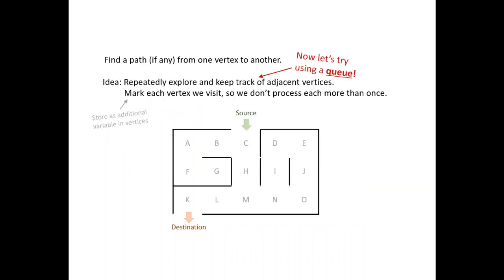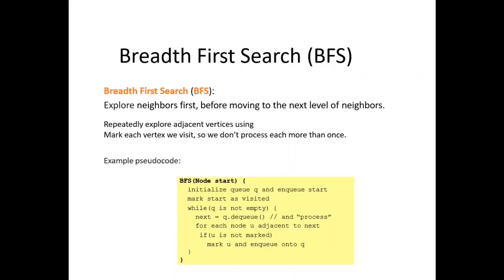But if you try using a queue, we have the same idea. We will repeatedly explore and keep track of each vertex we visit so we don't process them each more than once. We use breadth-first search there to explore the neighbors first before moving to the next level of neighbors. We repeatedly explore adjacent vertices using mark on each vertex we visit so we don't process each more than once. We have an example of pseudocode.